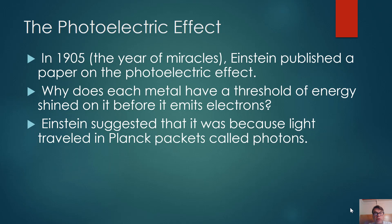Einstein takes Max Planck's suggestion and proposes that the reason for this threshold is because light travels and energy exists in little Planck packets called photons. It's only when the energy level reaches these thresholds. Energy is like stairs — when you go from energy level one to energy level two, you don't pass through one and a half or one and three quarters. Energy goes straight from one to two — Planck level one to Planck level two. Energy exists in quanta, not in a continuous form like a normal wave. Einstein suggested this explained the photoelectric effect, and he won the Nobel Prize for physics for it.